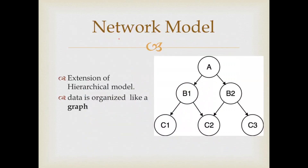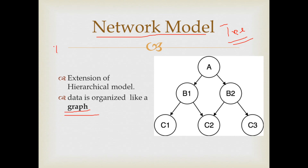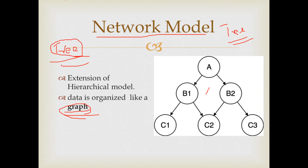The hierarchical model is based on a tree-like structure. In the network model, it follows a graph-like structure. In a tree graph, we have already discussed the graph, and here we have closed paths. So in the network model, data is organized like a graph.